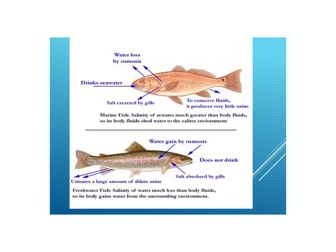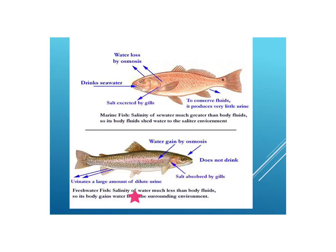By contrast, in freshwater fish the salinity of the water is much less than the body fluids, so it gains water from the surrounding environment. To combat that, it absorbs salt from the gills, urinates a large amount of dilute urine, and does not drink. These are two different ways to combat living in a watery environment — one with high salinity, one with low salinity.